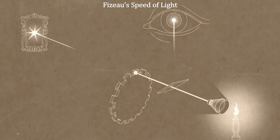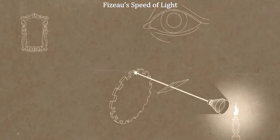Fizeau continued to make the wheel spin faster until eventually, the light would shoot through a gap and, by the time it traveled to the mirror and back,